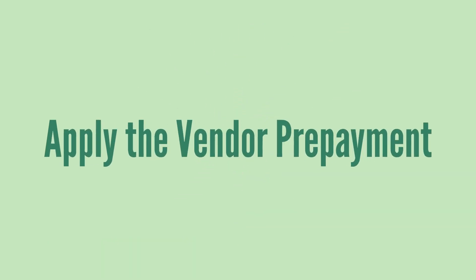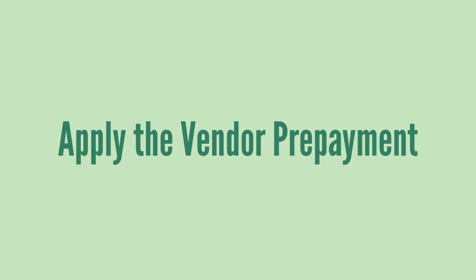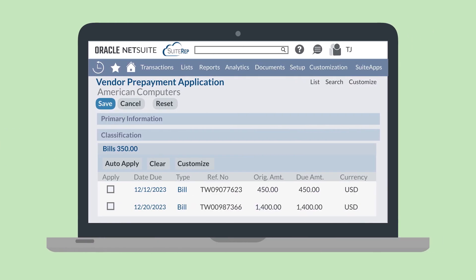When it comes to applying a prepayment to vendor bills, you have a couple of options. By default, the auto apply preference for vendor prepayments is turned on in accounting preferences. This preference prompts NetSuite to check for existing prepayments that would be eligible to use on new vendor bills. Your other option is to apply vendor prepayments manually. One benefit of manually applying prepayments is that if a vendor has multiple bills in the system, you can allocate specific amounts of a single prepayment to each bill, rather than the entirety of the prepayment going toward the oldest bill by default.